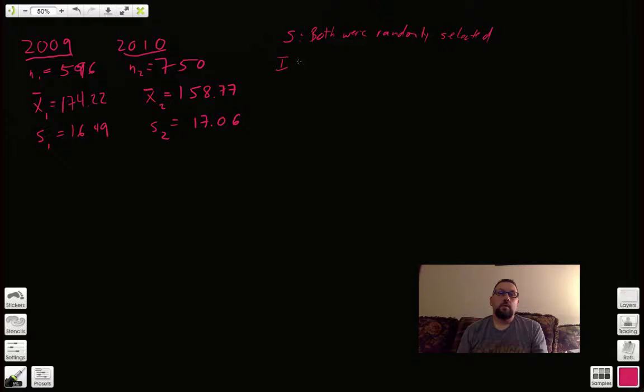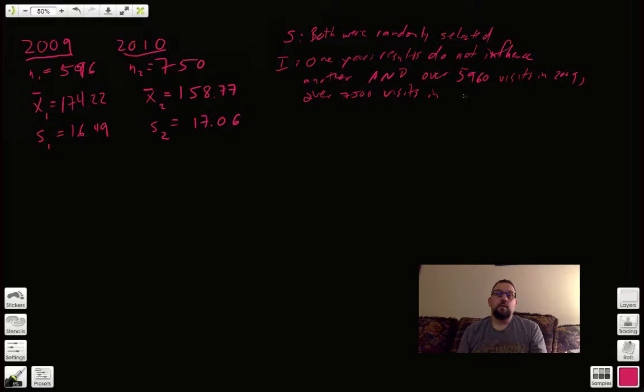Both were randomly selected. So, one year's results do not impact another or influence. And remember, when we're doing two samples, we've got to talk about both types of independence. So, one is that one doesn't influence the other and over 5,960 visits in 2009, over 7,500 drive-thru visits in 2010. Therefore, independent.